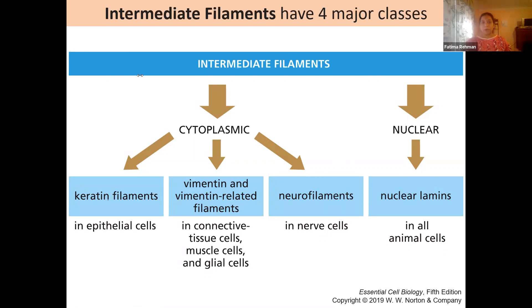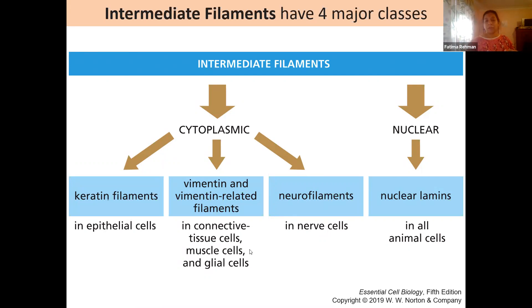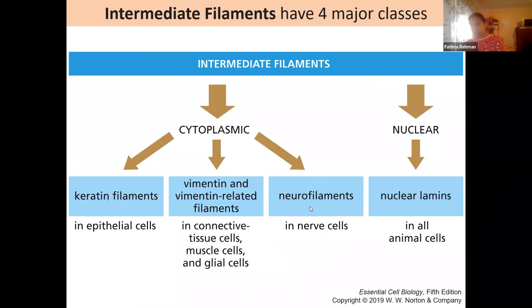Intermediate filaments fall into four major classes — three are cytoplasmic and one is nuclear. The three cytoplasmic classes are based on their general location and function: first, keratin filaments, which are part of epithelial cells; second, vimentin and related filaments, which are part of connective tissues, muscles, and glial cells in the brain; and third, neurofilaments, which are specifically for nerve cells. The nuclear class is the nuclear lamins.